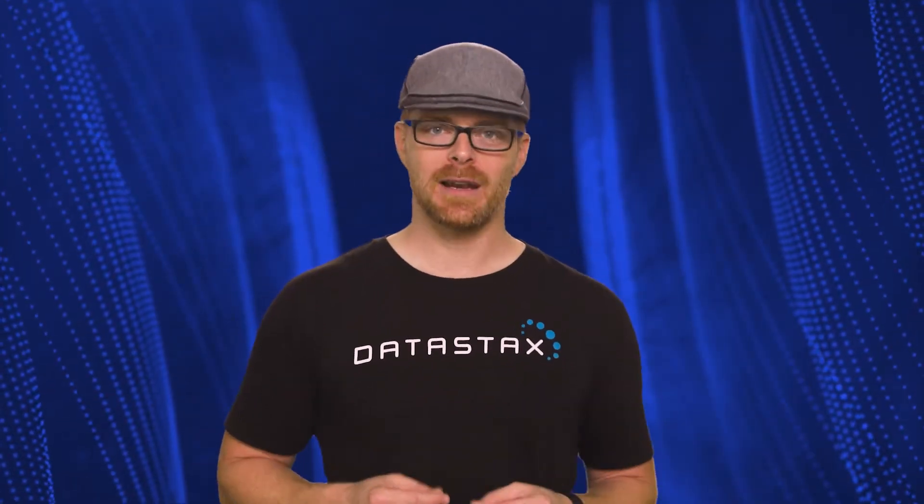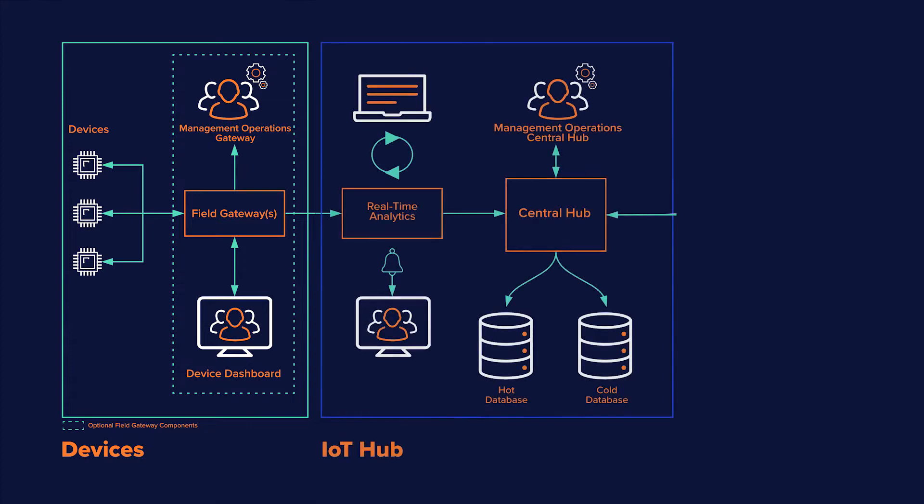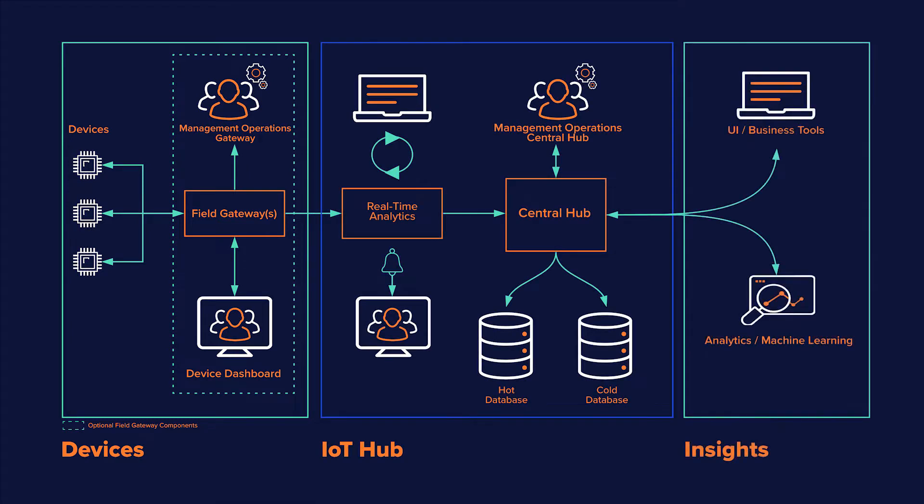Two main challenges that come with storing this amount of data are: one, how do we process and store this ever-growing amount of data? And two, how to store this data efficiently so that we can make it easy to retrieve and perform analytics? We can think of an IoT system as being divided into three main areas: one, devices; two, IoT Hub; and three, business insights.